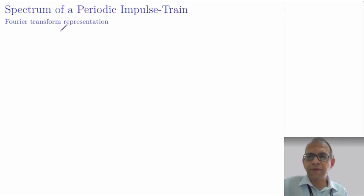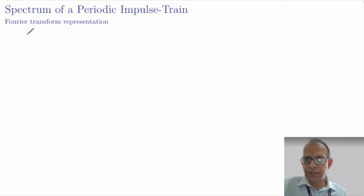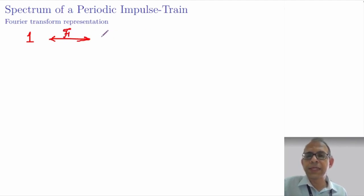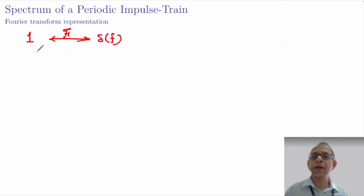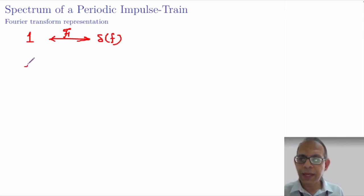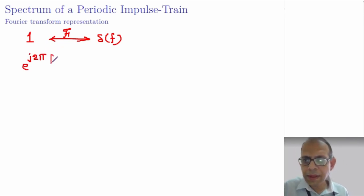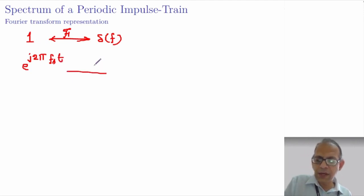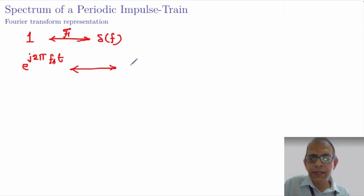We will use some properties of the Fourier transform to arrive at the spectrum of the impulse train. Recall that if we have a constant 1, its Fourier transform is given by δ(f) — an impulse in the frequency domain. Now if this 1 is multiplied by e^(j2πfs·t), then using the frequency shifting property, the Fourier transform becomes δ(f − fs).